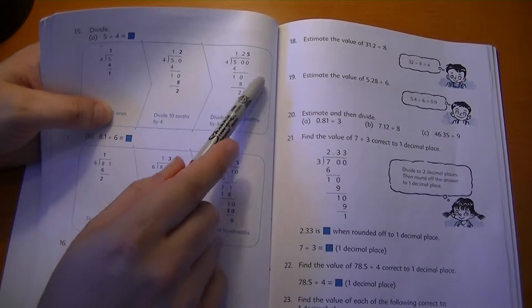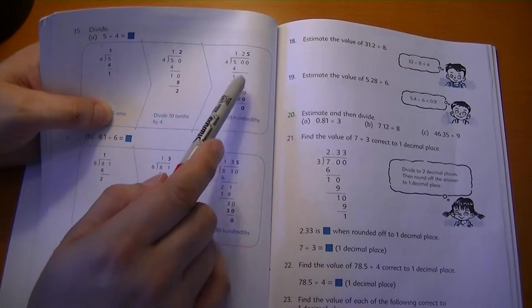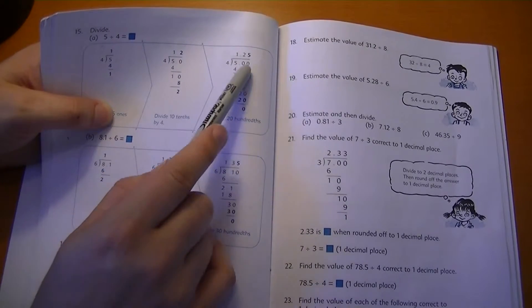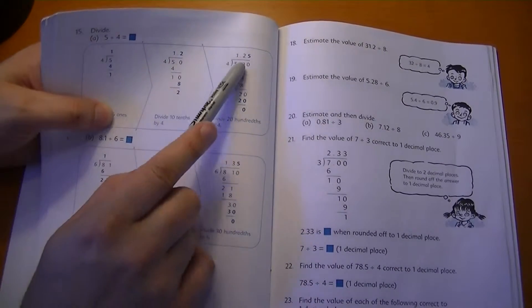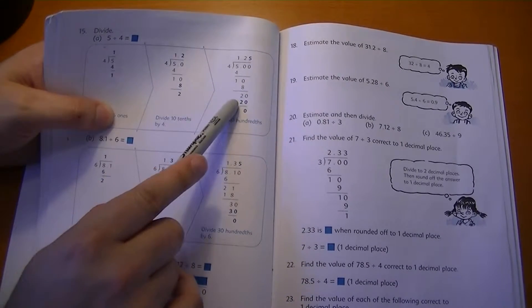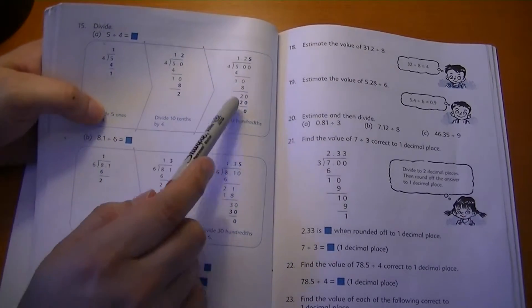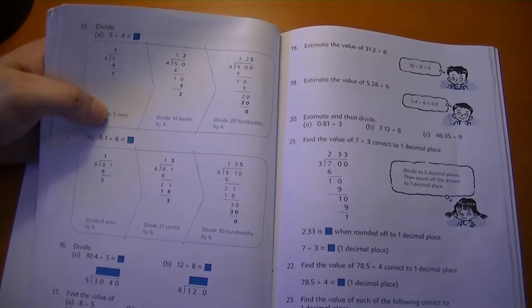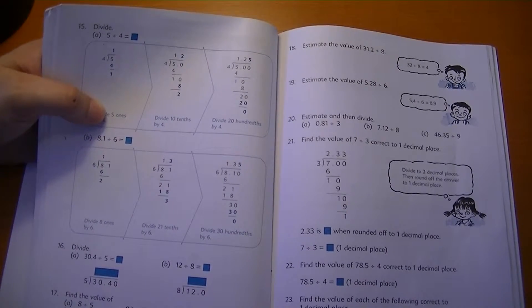So now we have twenty. We bring down the zero, now we have twenty. Four times what gets you close to twenty? Five. So twenty minus twenty is zero. So there's our answer, one point two five. Pretty easy.